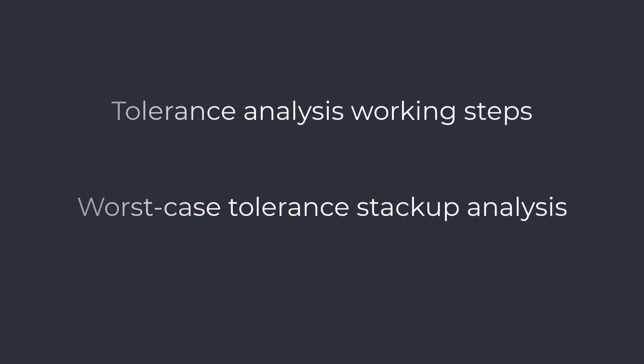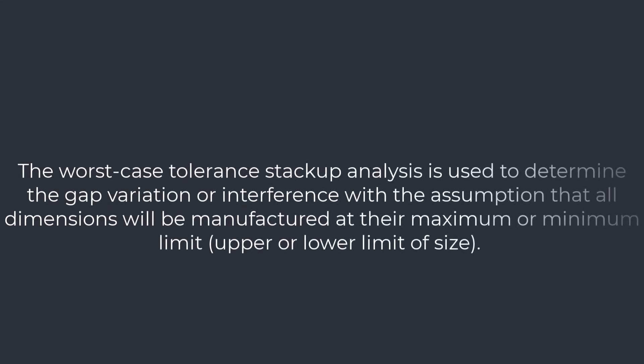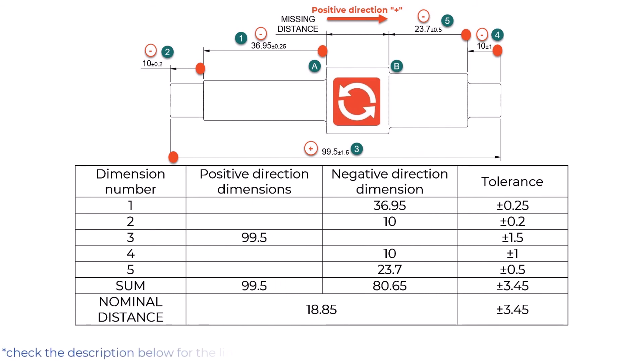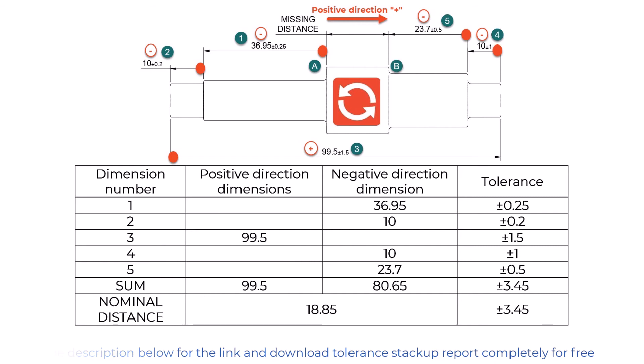Worst-Case Tolerance Stack-Up Analysis. The worst-case tolerance stack-up analysis determines the gap variation or interference assuming that all dimensions will be manufactured at their maximum or minimum limit — upper or lower limit of size. In the table, we write the values of the dimensions with positive and negative values together with the corresponding tolerances. The nominal distance equals the sum of positive-direction dimensions minus the sum of negative-direction dimensions, while the total tolerance is the sum of all individual tolerances. The missing distance dimension is 18.85 ± 3.45 millimeters.